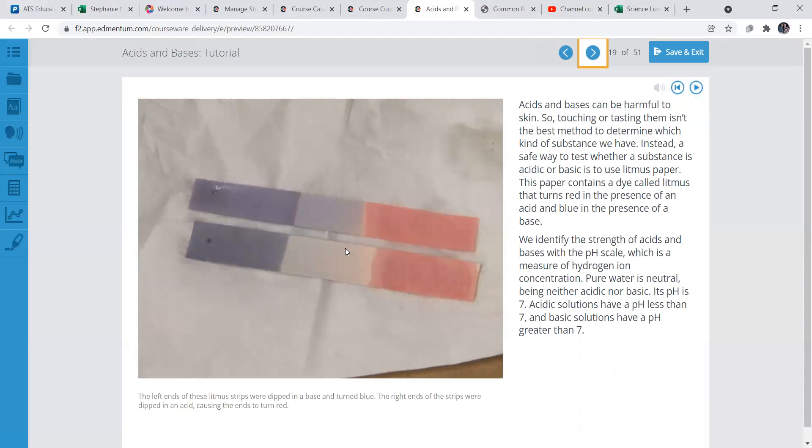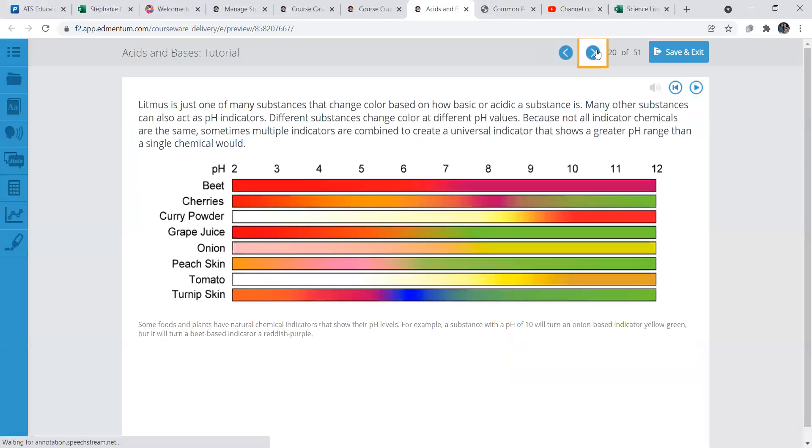Okay, another example of the red paper and the blue paper. Litmus paper is what it's called. And here's the difference between acids and bases. I did this in my experiments as well. So you can see kind of the difference. It's pretty cool.